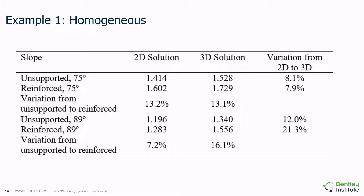If we extend this analysis to a number of conditions with various anchor configurations, we can see that there is a general increase in the factor of safety from 2D to 3D analysis, with the increase ranging between approximately 8% at the low end and 21% at the high end. These numbers cannot be considered general, and the user is encouraged to analyze the specifics of each particular site.